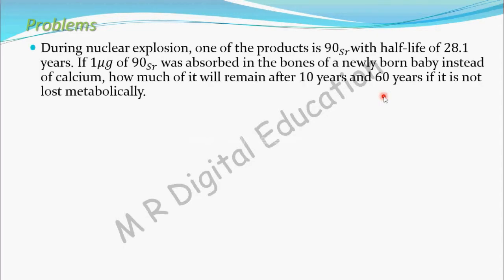During a nuclear explosion, one of the products is Sr-90, a strontium isotope with a half-life of 28.1 years. If one microgram of this strontium isotope was absorbed in the bones of a newly born baby instead of calcium, how much of it will remain after 10 years and 60 years, if it is not lost metabolically?